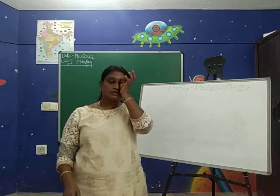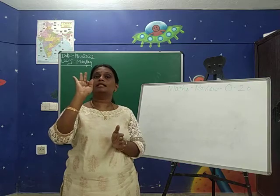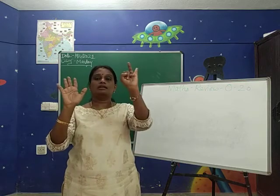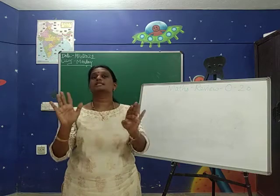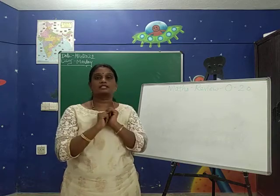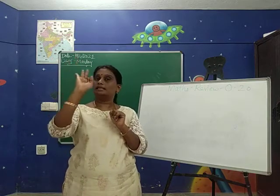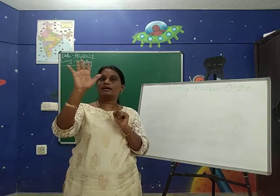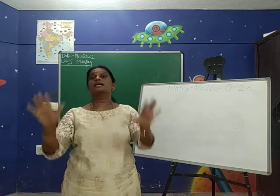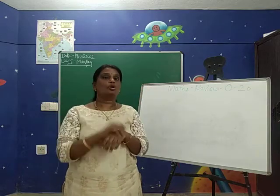Now we shall sing a numbers song. One little, two little, three little fingers. Four little, five little, six little fingers. Seven little, eight little, nine little fingers. Ten little fingers on my hands. You have to count with your fingers also and sing this song — please practice. Once again: one little, two little, three little fingers. Four little, five little, six little fingers. Seven little, eight little, nine little fingers. Ten little fingers. You have ten fingers — count them and show me.